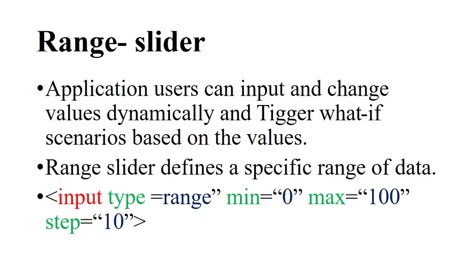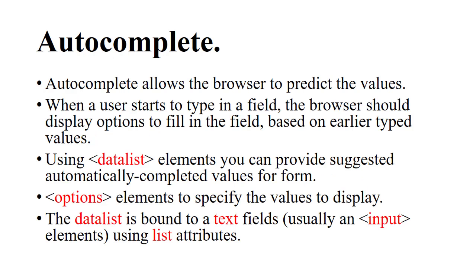The range slider input type allows users to input and change values dynamically, and trigger what-if scenarios based on the values. Range sliders define a specific range of data. The syntax for the range slider is: input type equals 'range', min equals 0, max equals 100, and step equals 10.